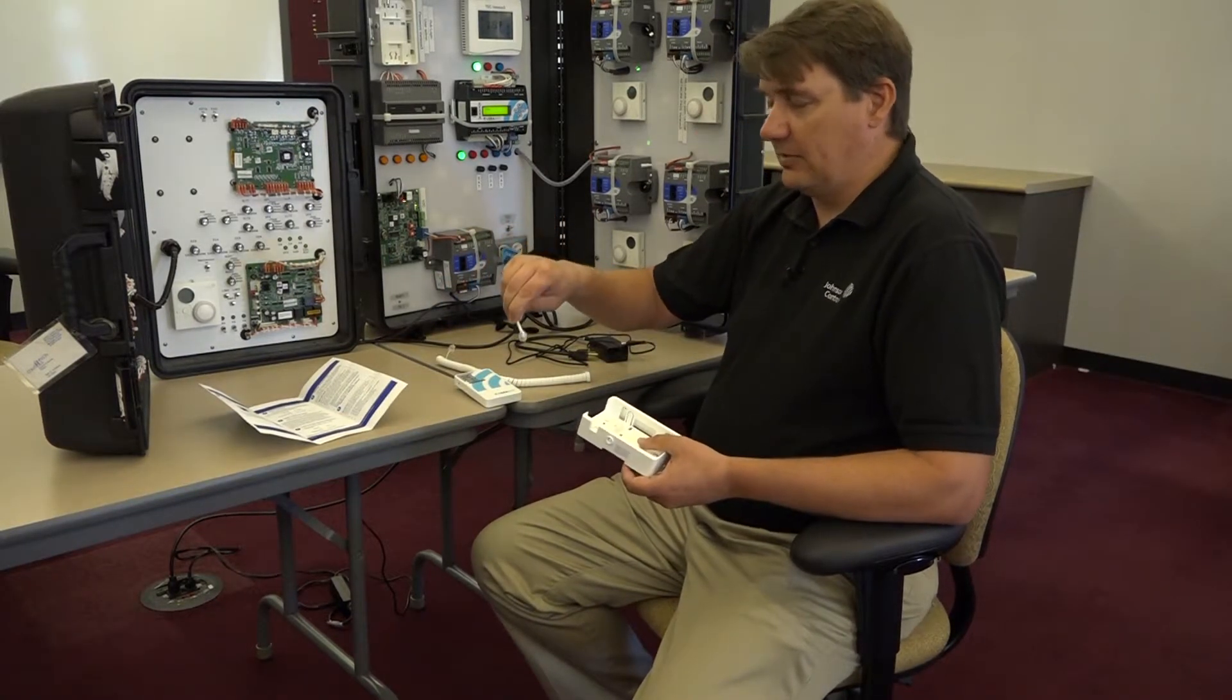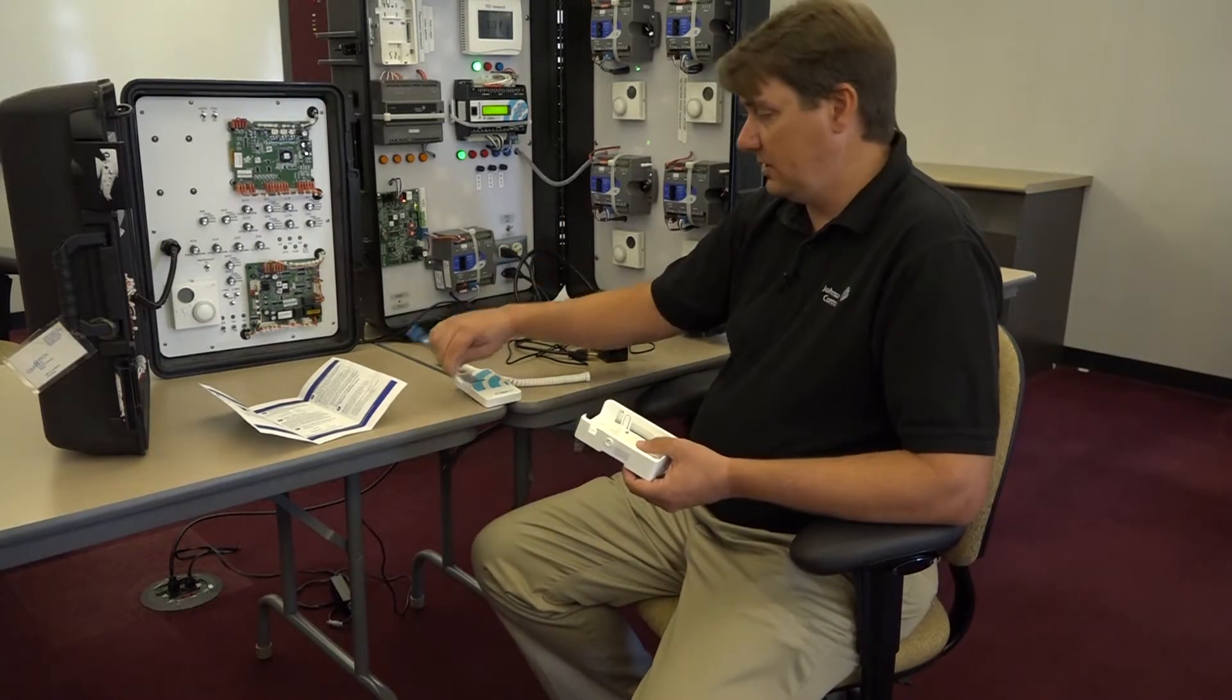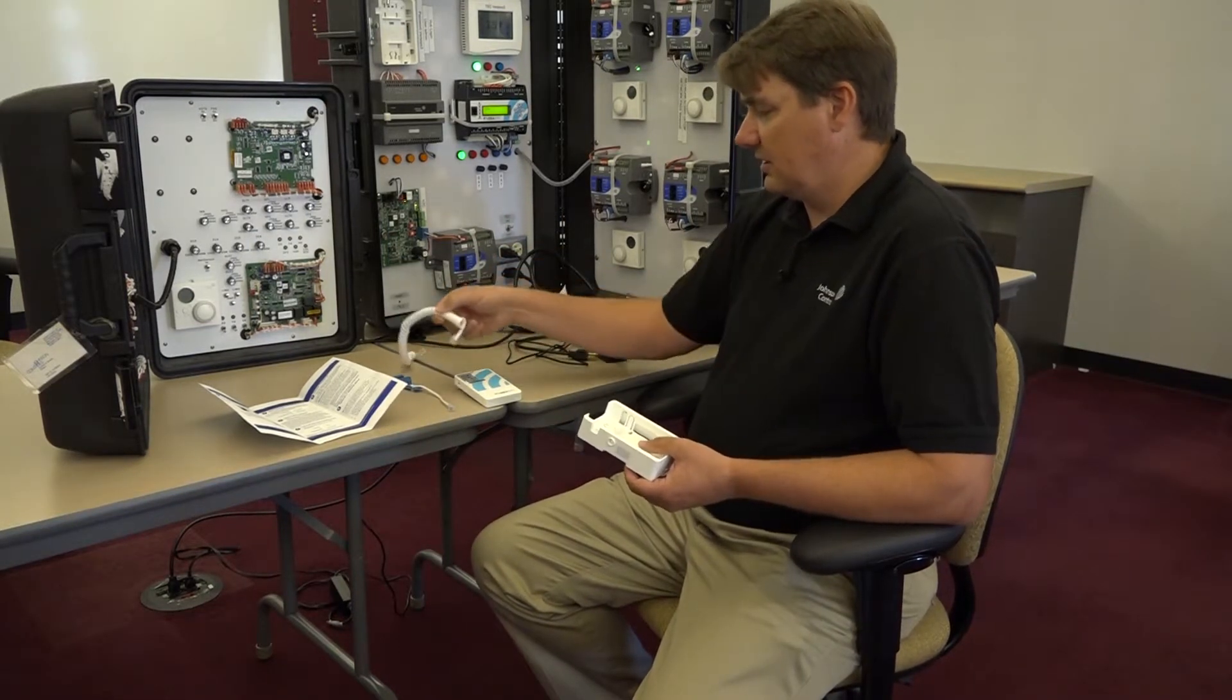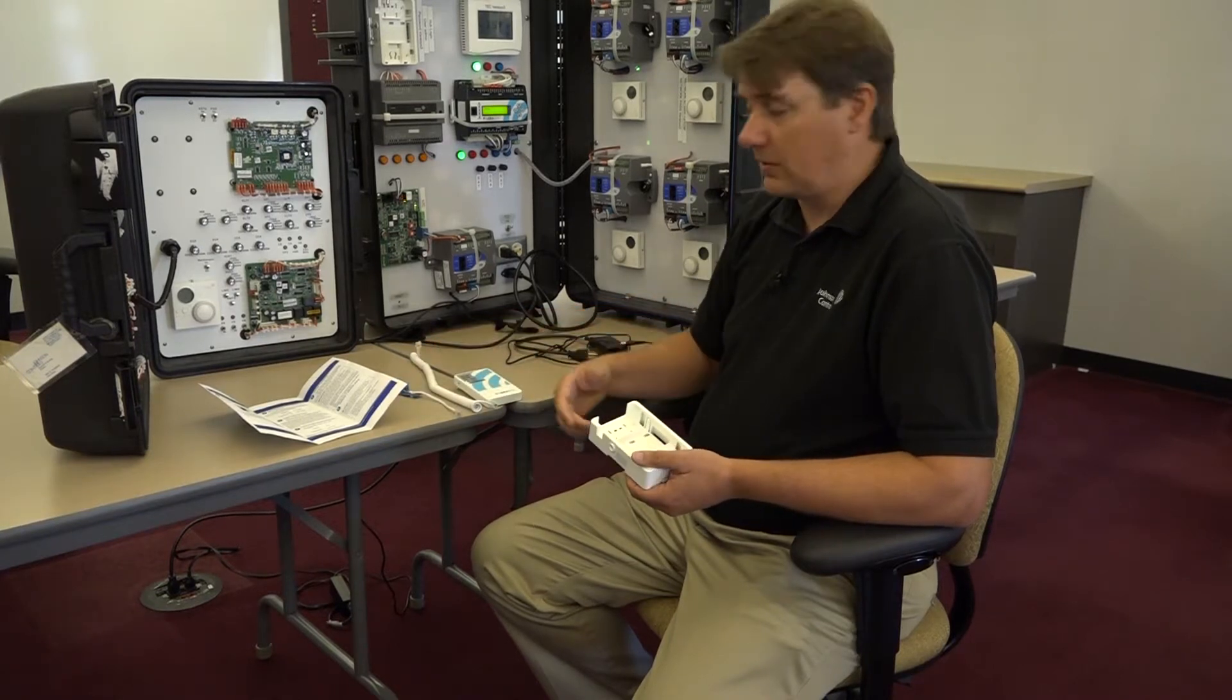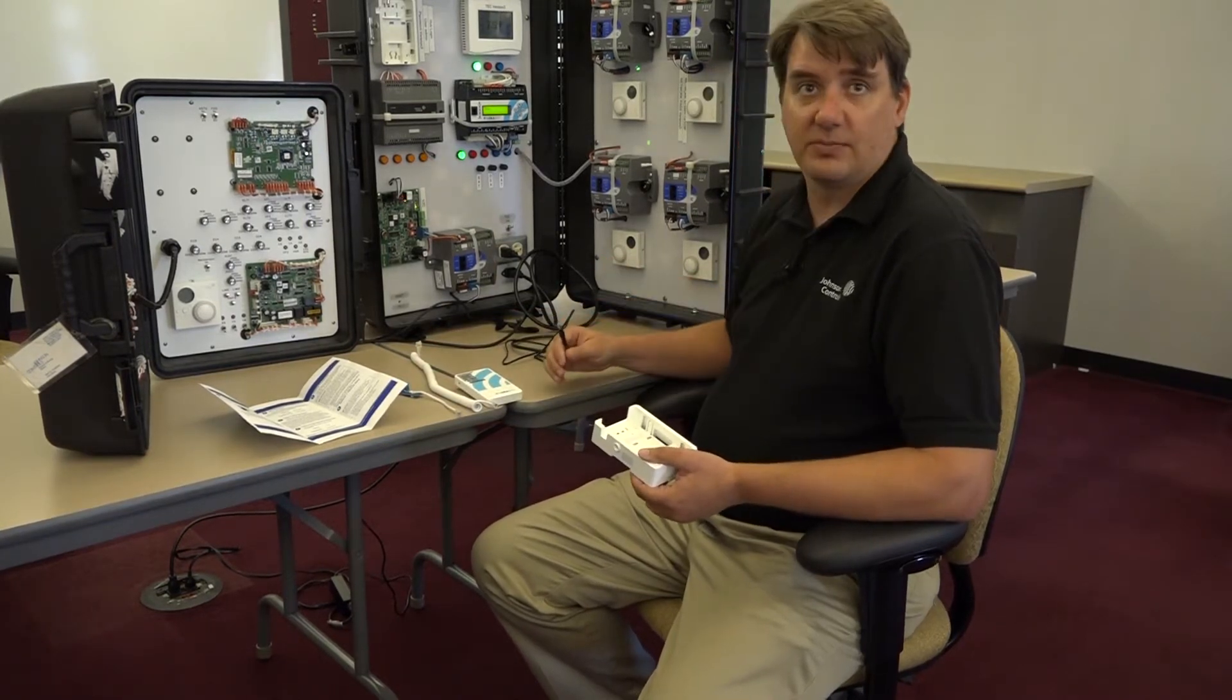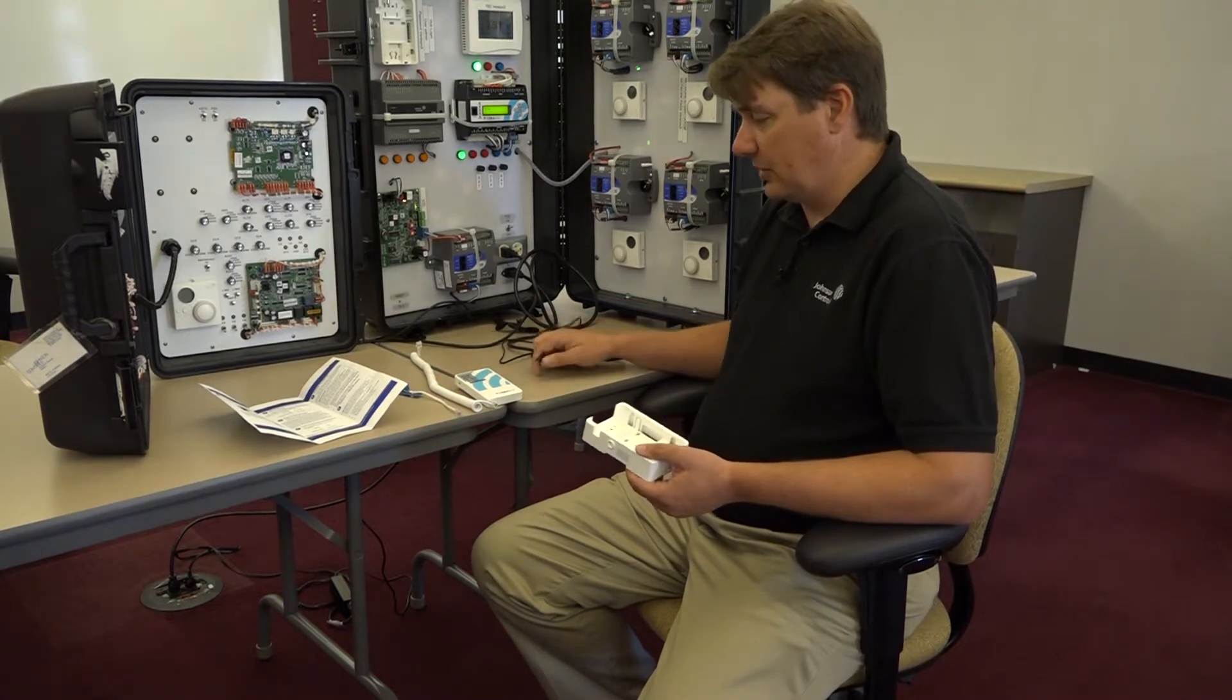you'll have an MSTP interface cord, as well as another MSTP interface cord, and I'll go through what each of those are used for. And you will also have a permanent power supply for the Smart Building Hub.